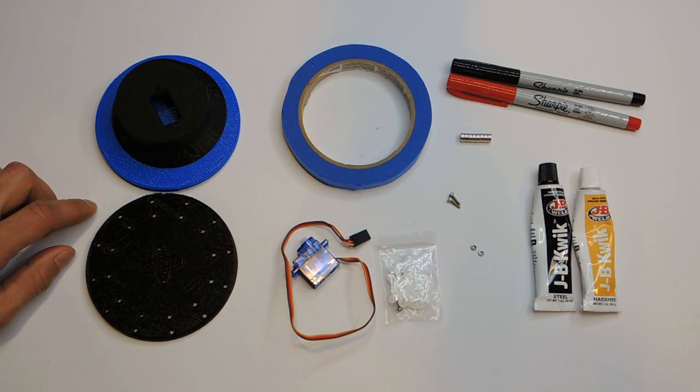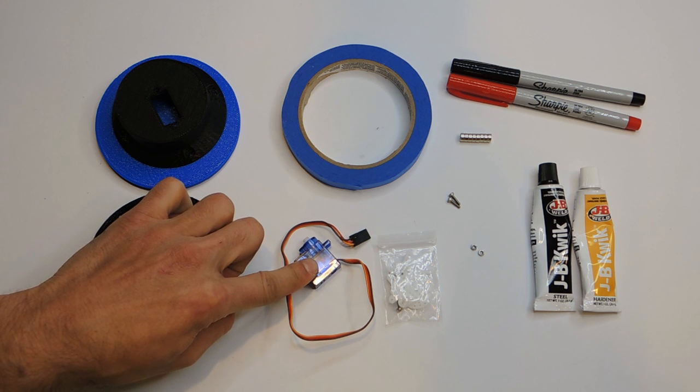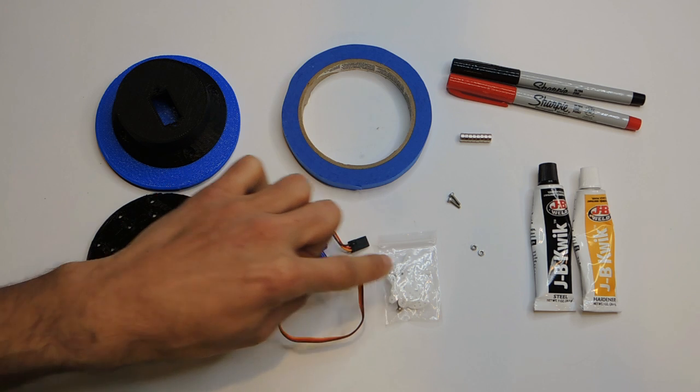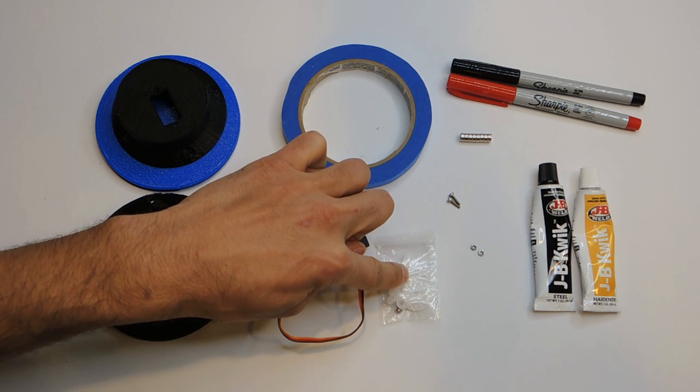To make the mini version of this DIY motorized turntable, you're going to need an $8 off the shelf continuous rotation servo. I'm using the Fetec FS90R and the corresponding motor servo horns that come with it.